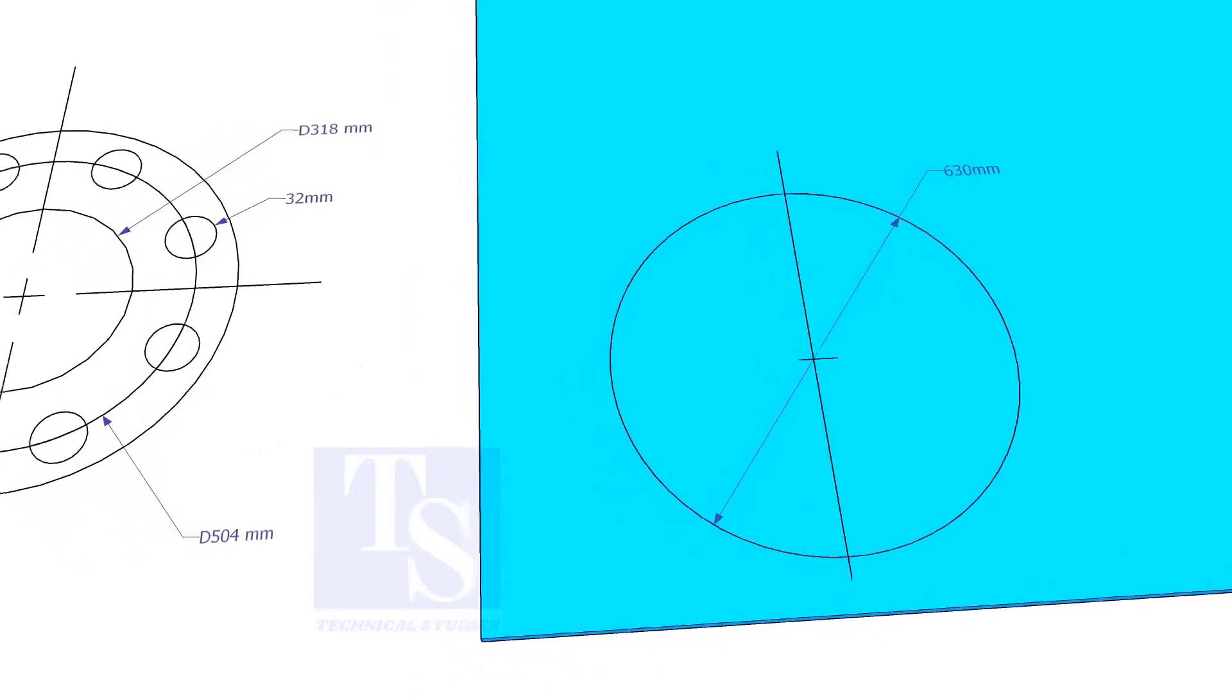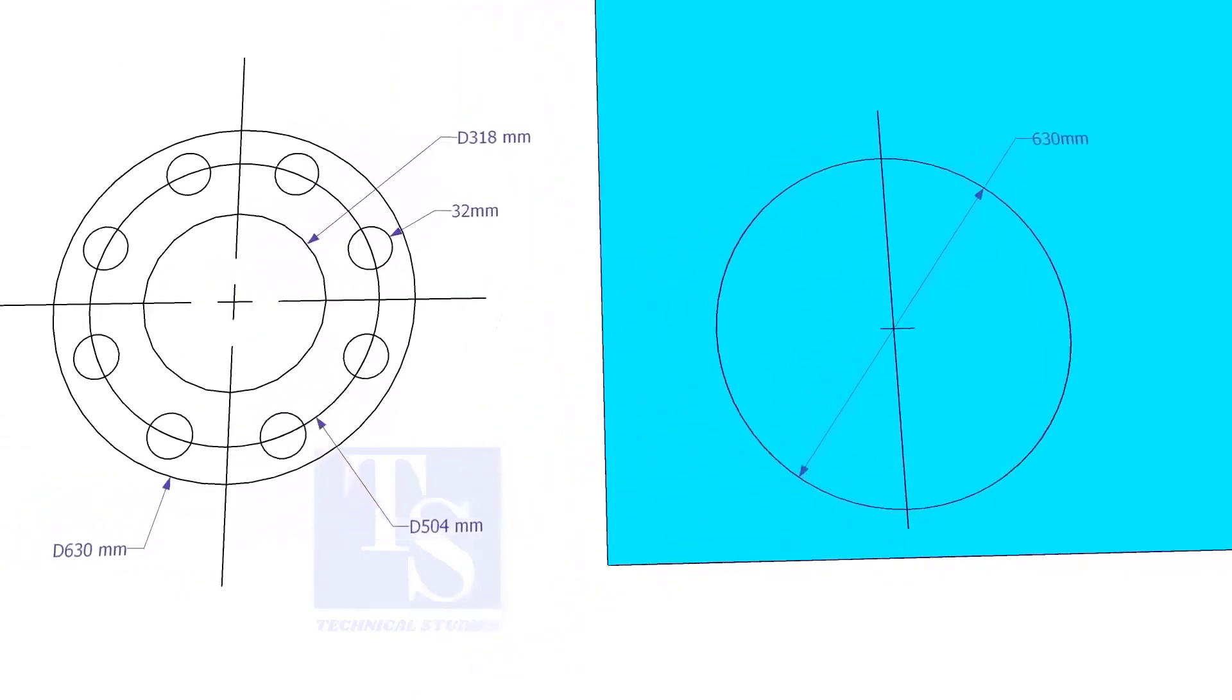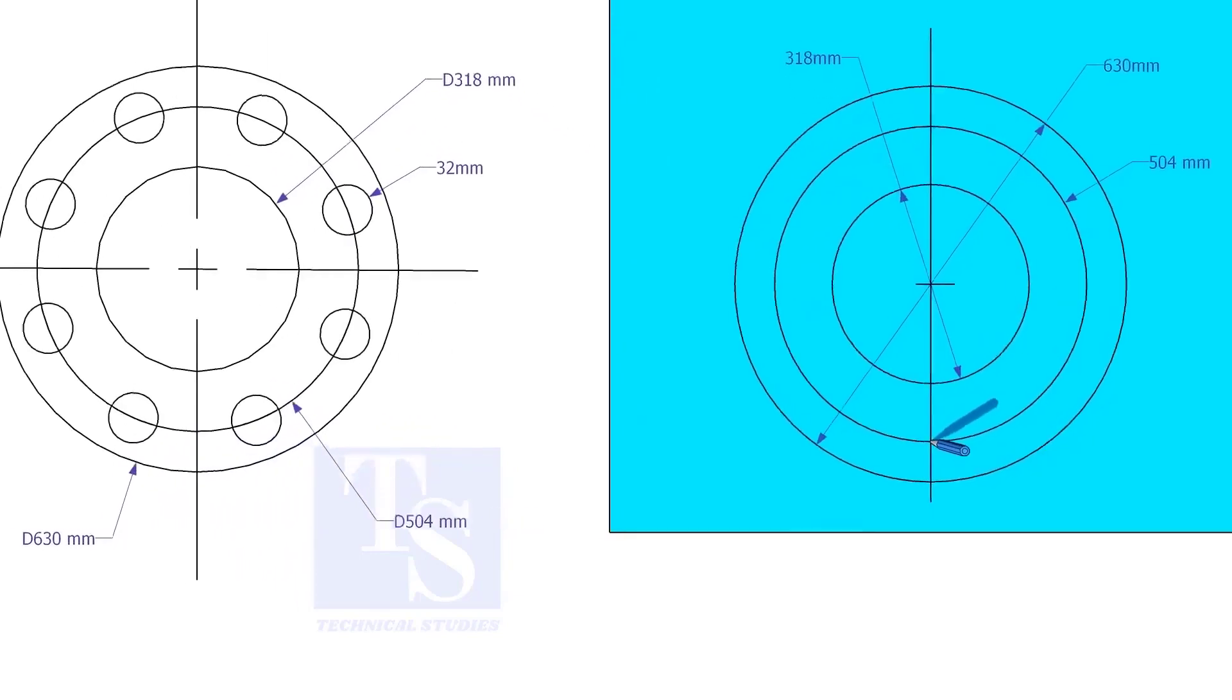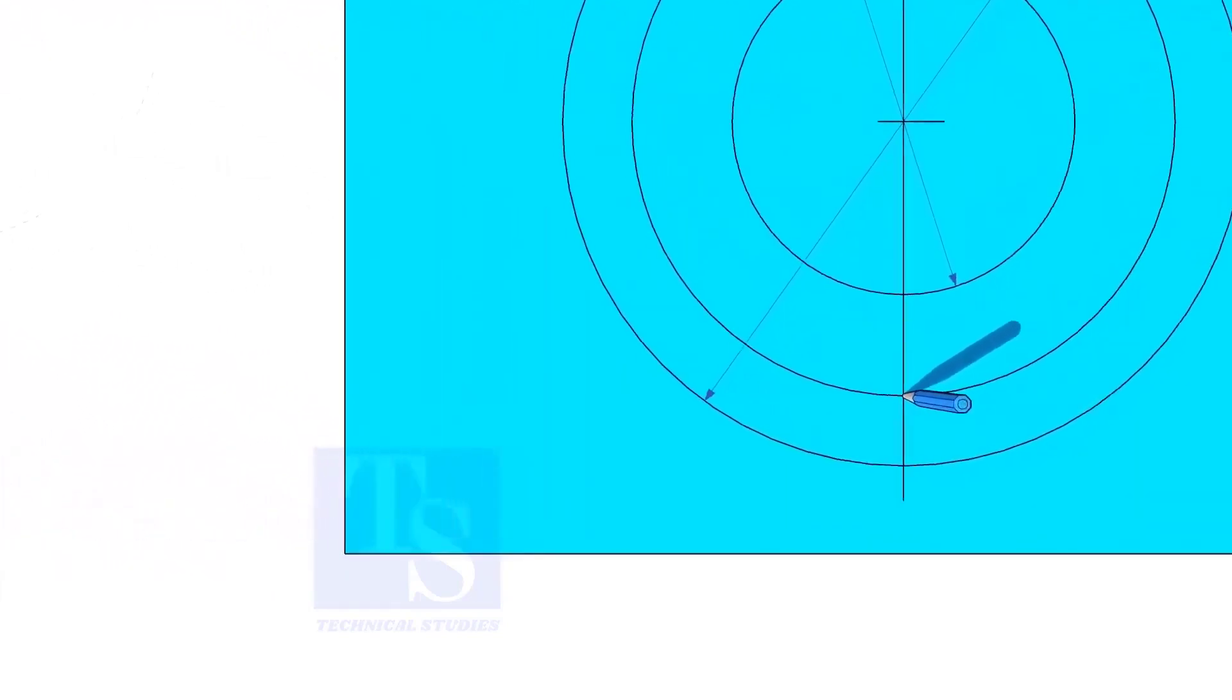Draw the OD and the ID circles. Draw the PCD. Punch mark where the PCD circle cuts the center line.